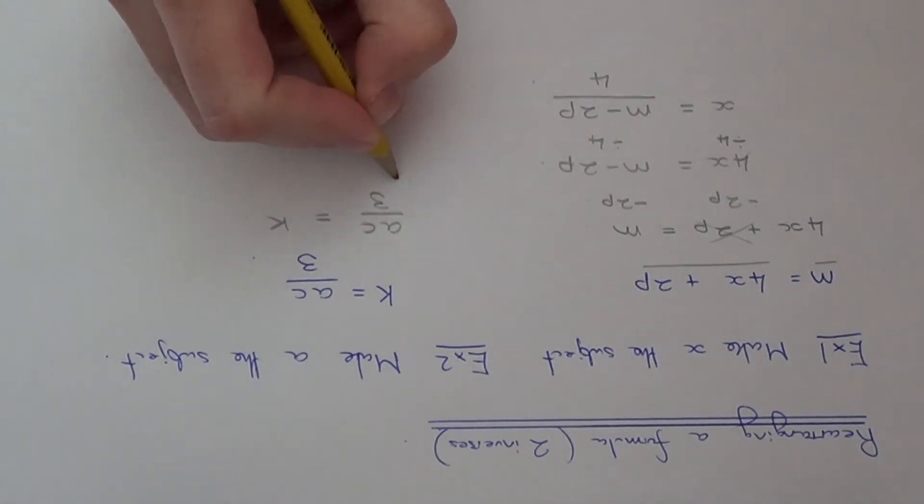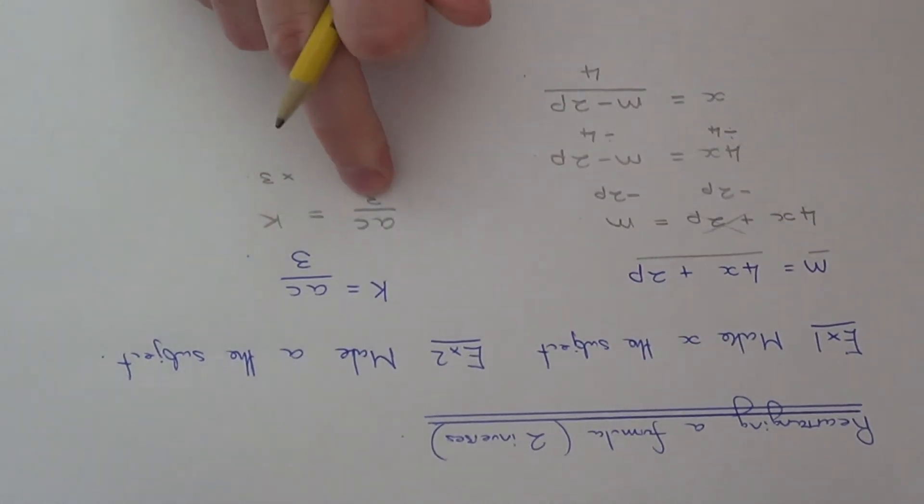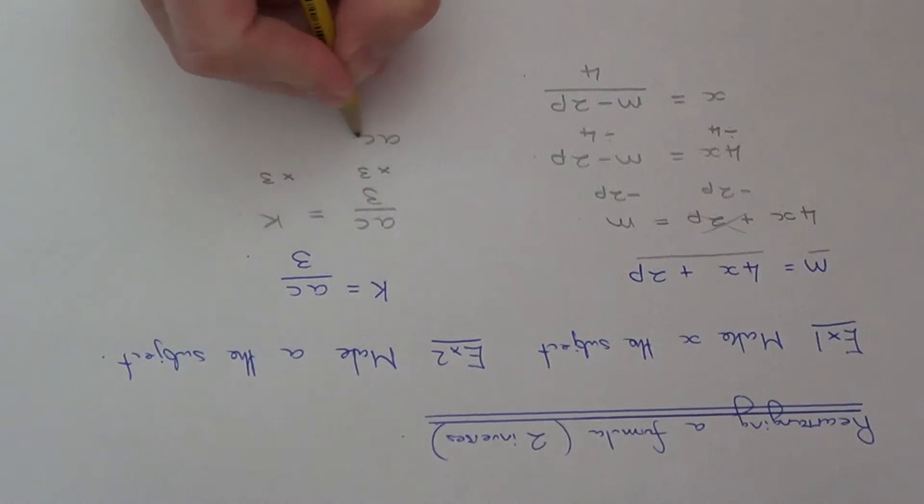The opposite is to multiply by 3 on both sides. That will get rid of the 3 and leave us with ac. If we times the k by 3, how would we write that in algebra? We write it as 3k.